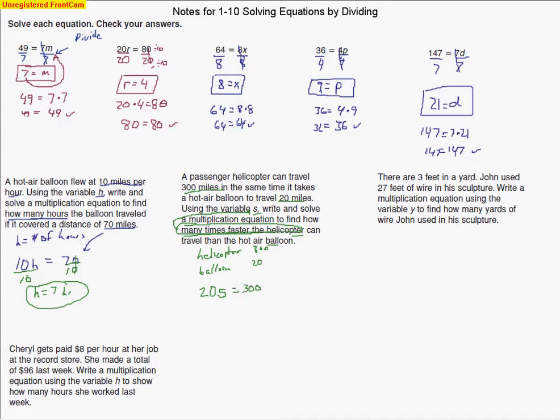If we do 20 times the number of times faster S, that will equal the helicopter's distance, 300. All we have to do to solve that is divide by 20. We can cancel out some zeros again. 2 goes into 30 fifteen times. So S equals 15 times faster.